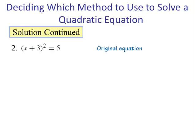Number 2. It's best to use the square root property for this equation. We take the square root of both sides and get x + 3 = ±√5. Don't forget the plus or minus. Next, subtract 3 from both sides, and we have x = -3 ± √5.